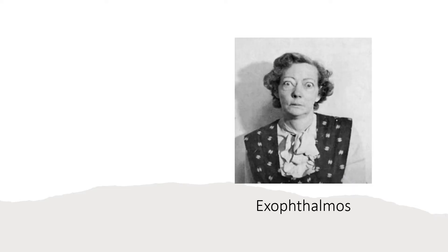Here you can see the picture of a person with exophthalmos. You can see how the eyeballs are protruded, and also you can notice that the upper eyelids are retracted. The eyeballs are so protruded out that the upper eyelids get retracted upwards.